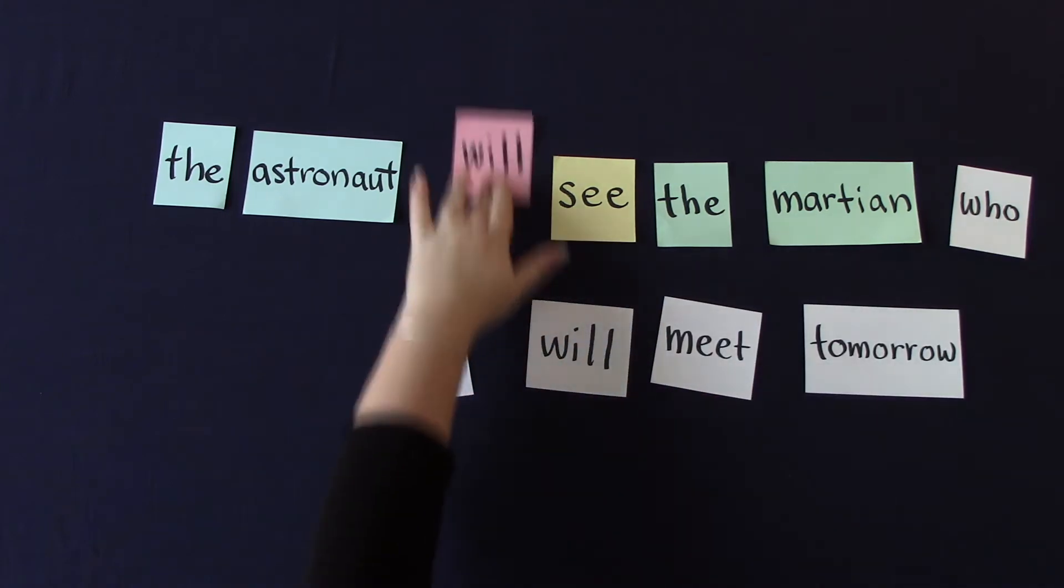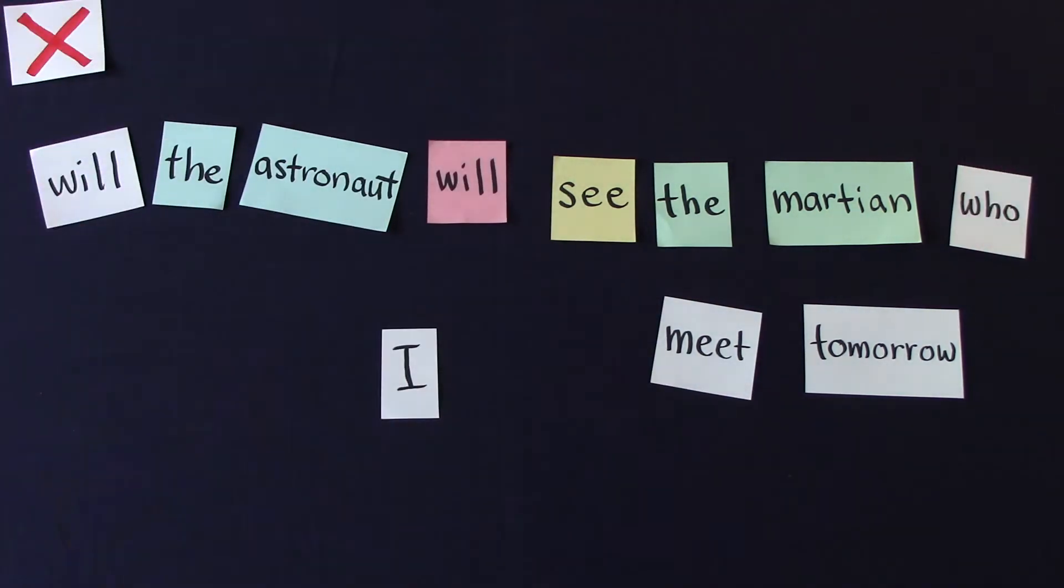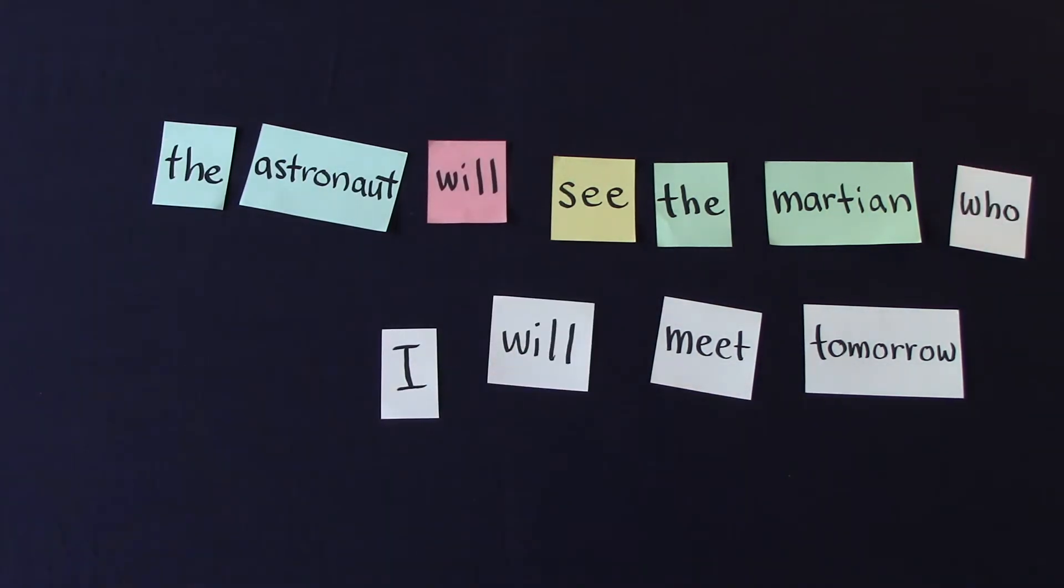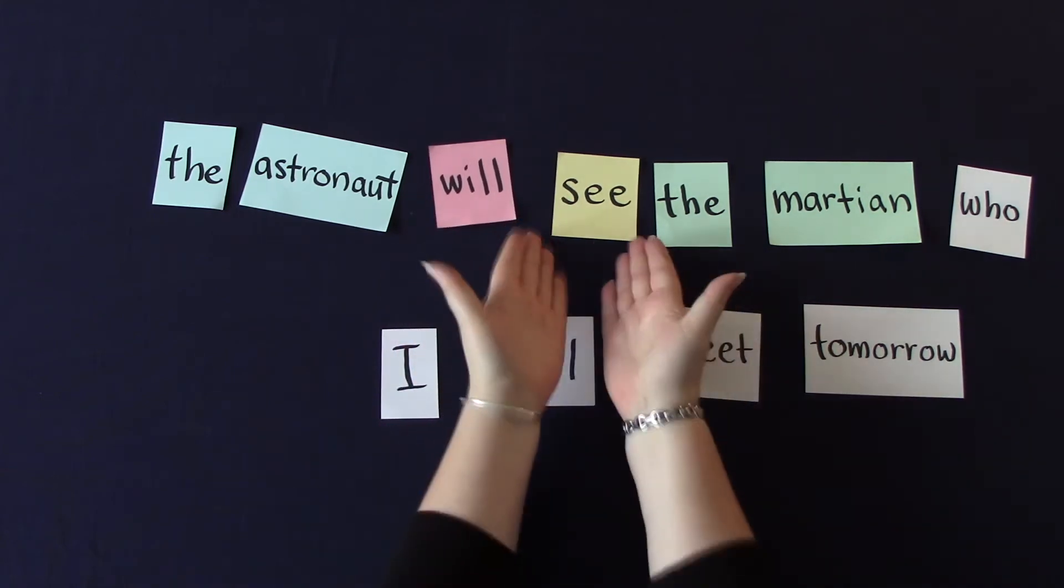And what we really want to do is move this will and not this one. But that does give us a clue. In both cases, we want to move the will that's before see rather than the will that's before meet. Is it something about the verb see?